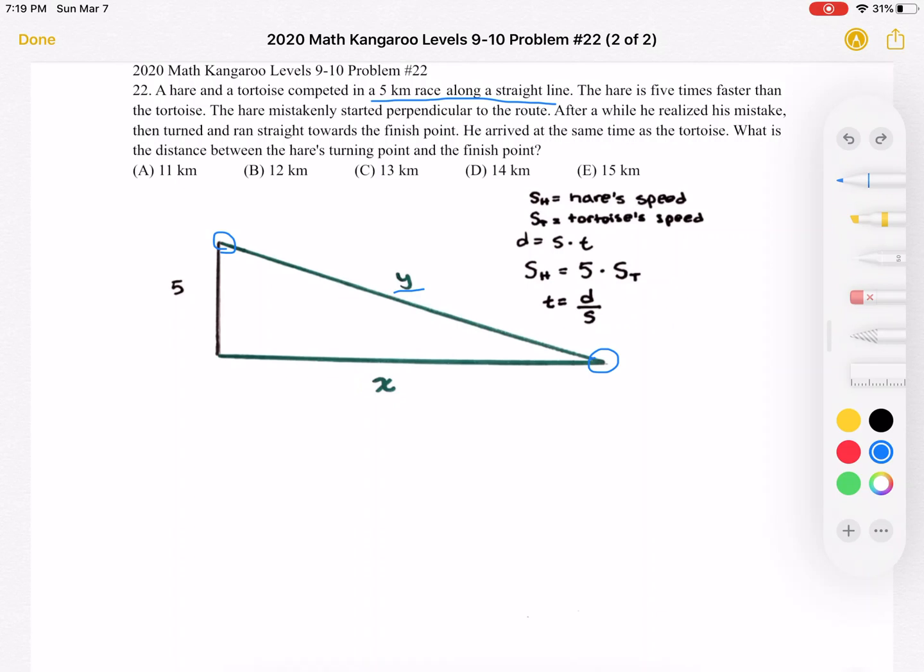Let's note a few more things we know from the problem. We know the hare is 5 times faster than the tortoise. So we're going to say S sub H stands for the hare's speed, S sub T is the tortoise's speed. We know that distance is equal to speed times time, and from the problem we know that the speed of the hare is equal to 5 times the speed of the tortoise.